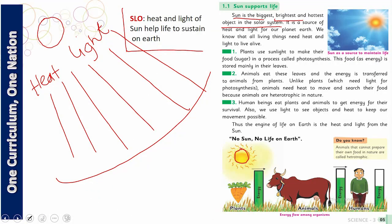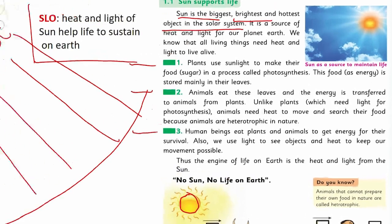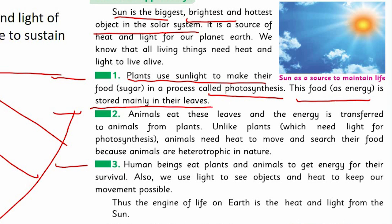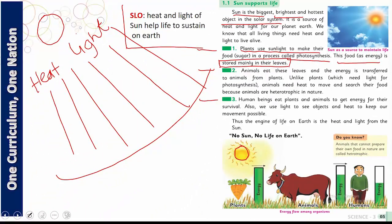The sun is the biggest, brightest, and hottest object in the solar system. When its rays reach us, there are three advantages. First, plants use sunlight through the process of photosynthesis to produce their own food, and this food is stored in the leaves of plants. Plants contain chlorophyll, and through photosynthesis, sunlight helps produce food which is stored in their leaves.